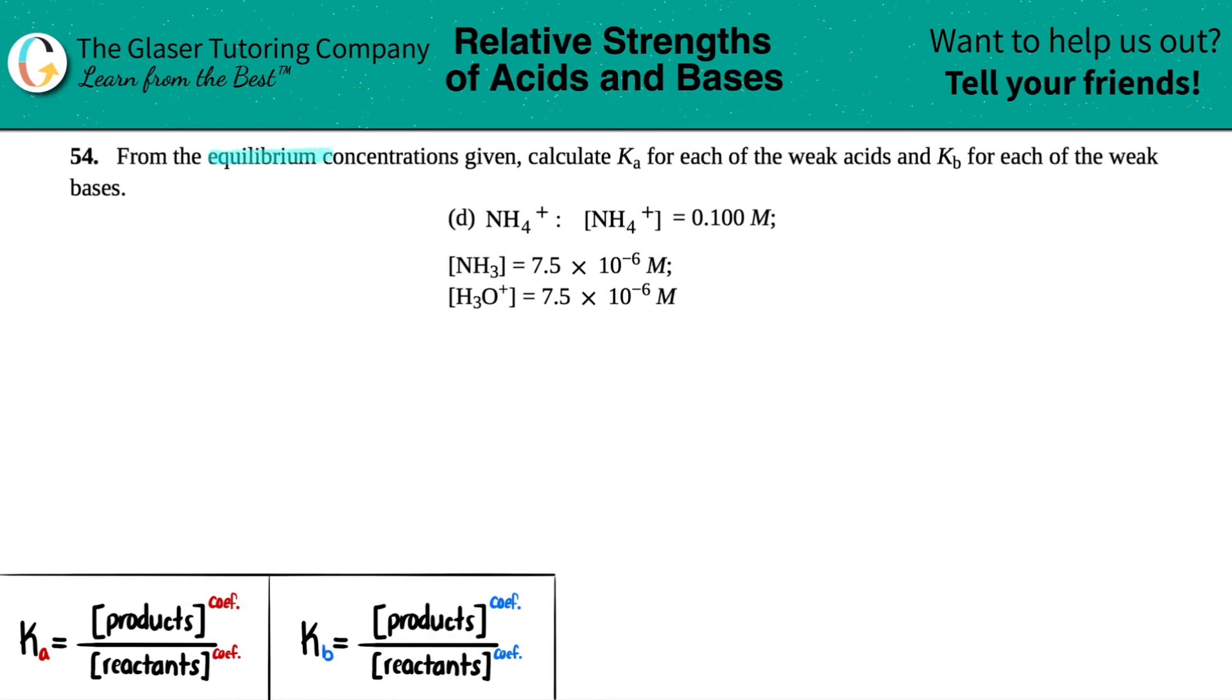Number 54: From the equilibrium concentrations given, calculate Ka for each of the weak acids and Kb for each of the weak bases. In this case we have ammonium, which is NH4+.